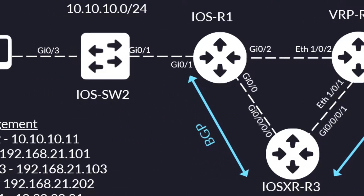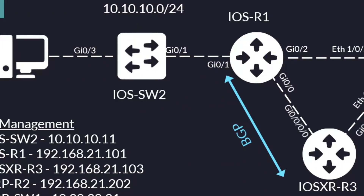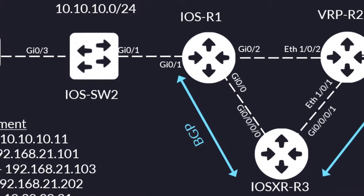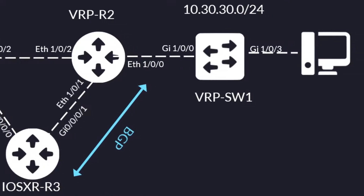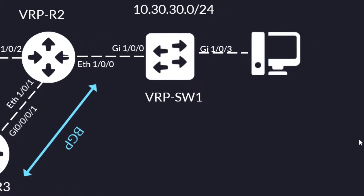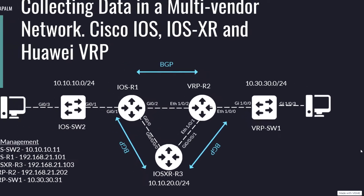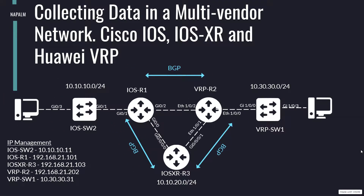On the left we also have the local network 10.10.10.0/24, which communicates with the network on the right, 10.30.30.0/24. In the center, the routers share their routes using the dynamic routing protocol BGP.